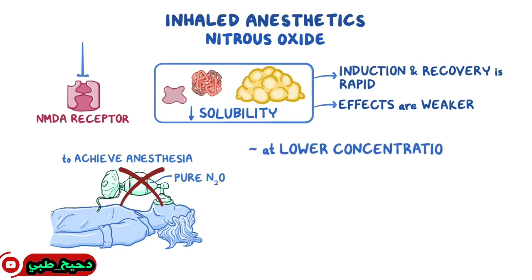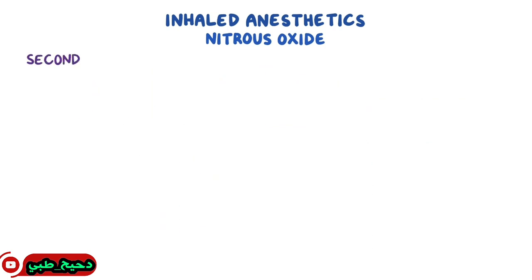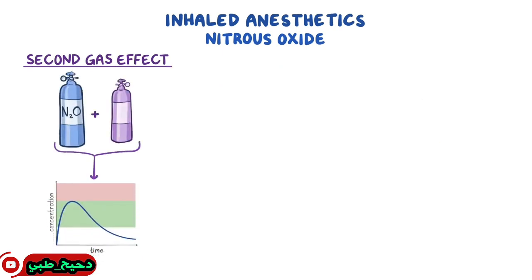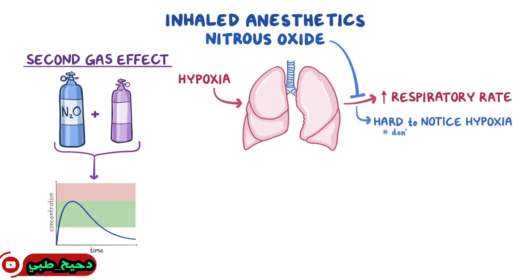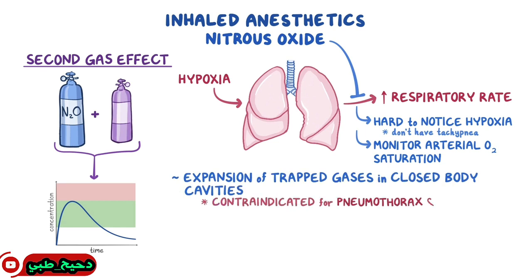However, at lower concentrations, nitrous oxide has an analgesic effect, so it's used in dentistry. Nitrous oxide also has a second gas effect, which means when combined with other anesthetics, it lowers the therapeutic dose required for the other agents. It's important to keep in mind that the respiratory system normally responds to hypoxia by increasing the respiratory rate, but nitrous oxide diminishes this response. As a result, it's hard to notice hypoxia because we don't have signs like tachypnea. That's why it's important to monitor arterial oxygen saturation at all times. In addition, nitrous oxide can cause expansion of trapped gases in closed body cavities, so its use is contraindicated for people with pneumothorax and bowel obstructions.